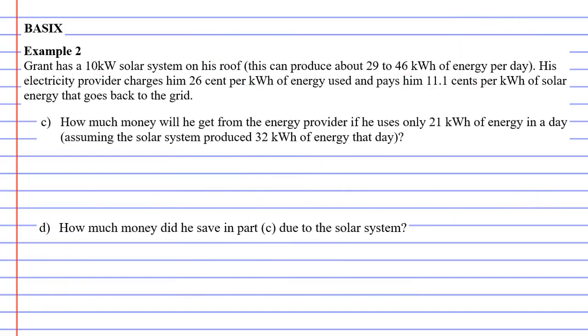We have two more examples we're going to look at, part C and part D. So next it says, how much money will he get from the energy provider if he uses only 21 kilowatt hours of energy in a day? Assuming the solar system produced 32 kilowatt hours. So he's actually used less than what the solar panels have generated. So once again, we're going to subtract them. 32 minus 21, which gives us 11 kilowatt hours, which went back to the grid.